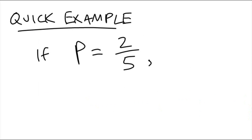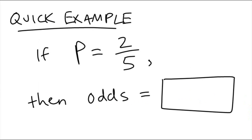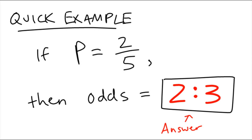Let's do a quick example. If I had a generic probability of 2 fifths, what would be the odds? 2 to 3 would be the odds.